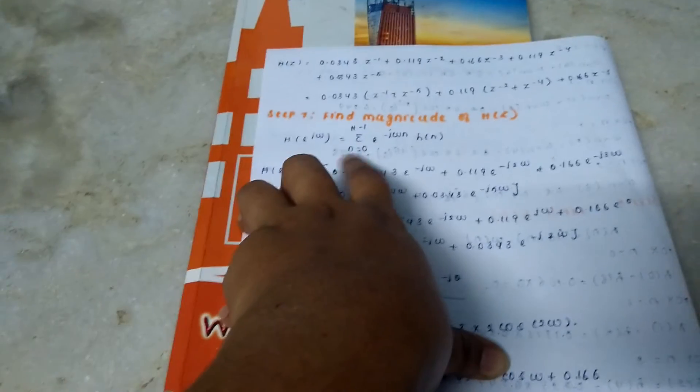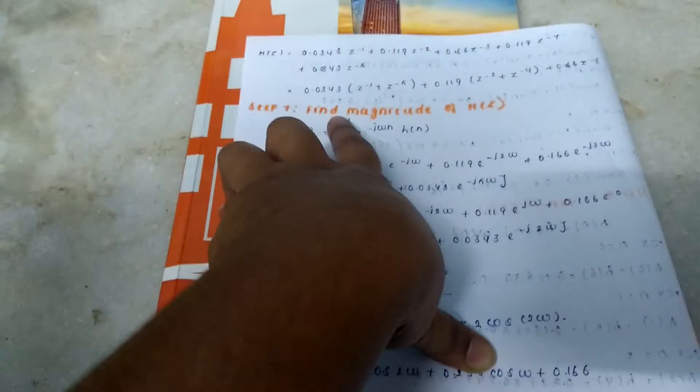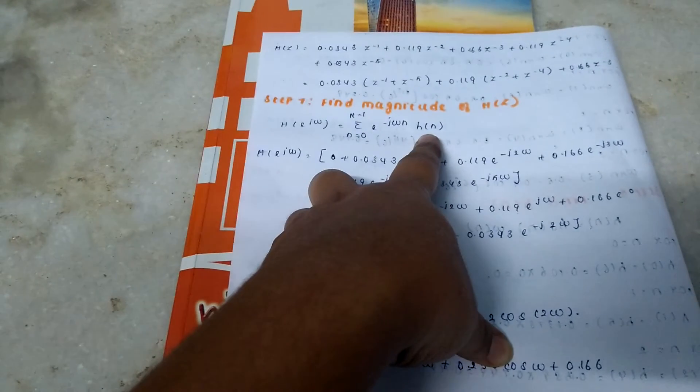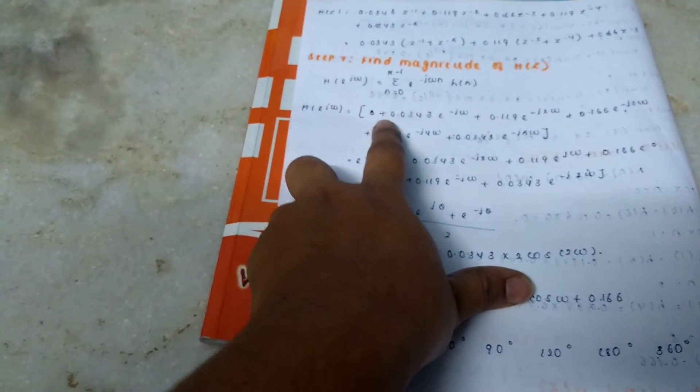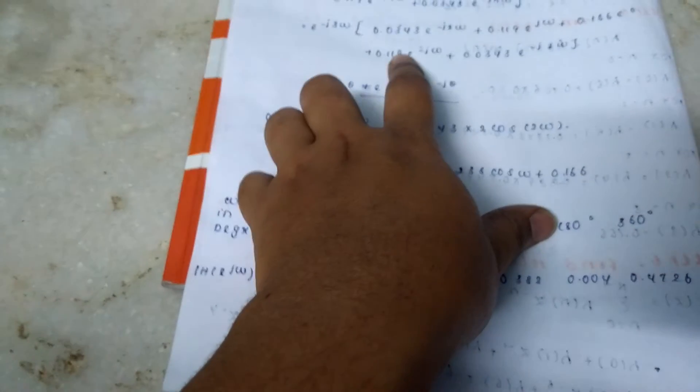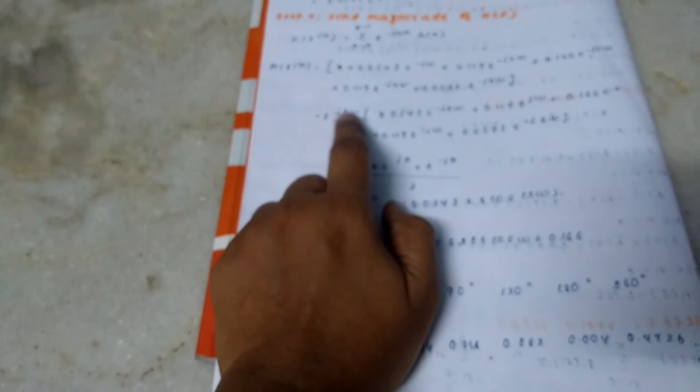The value will range from 0 to 6. You know the value of h(n). Then substitute your h(n) value and e^(-jωn) value. In the next step, take your e^(-j3ω) as a common term because your 3 is your alpha value.